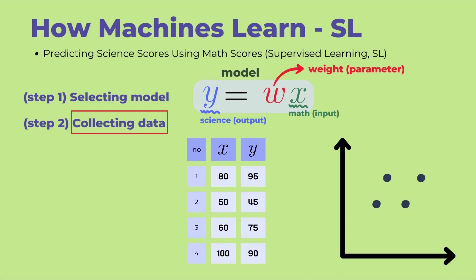For student 1, the math score X is 80, and the science score Y is 95. For student 2, the math score X is 50, and the science score Y is 45.